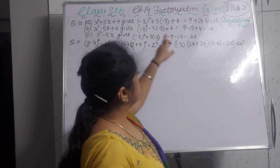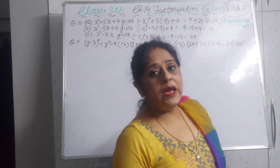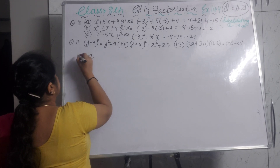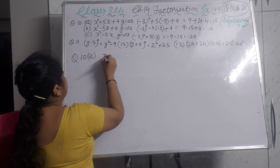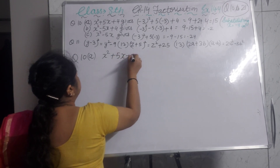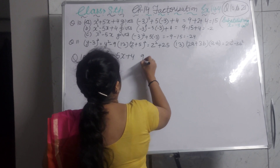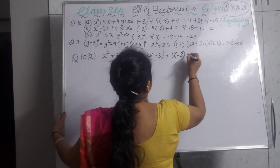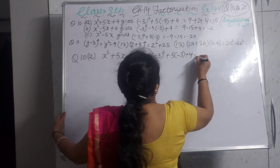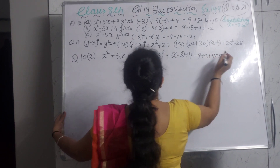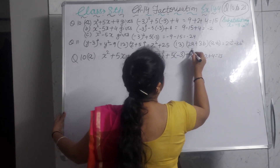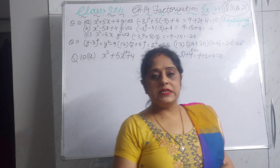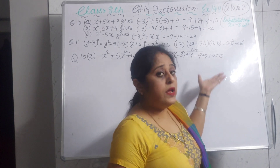In the 10th sum there are 3 parts and we have to substitute the x value as minus 3. I am explaining the 10th sum, part a. The expression is x² + 5x + 4, which gives minus 3 whole square plus 5(minus 3) plus 4, equalling 9 plus 2 plus 4, giving 15. This is the right hand side.